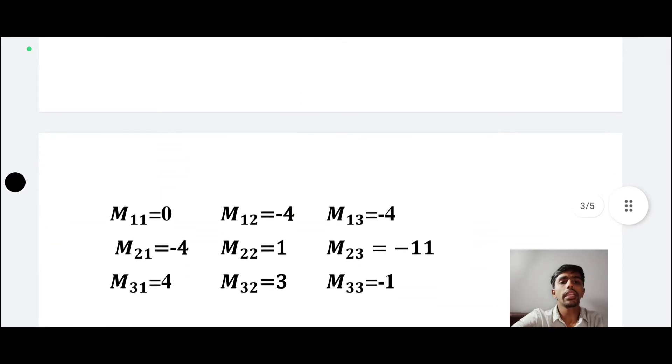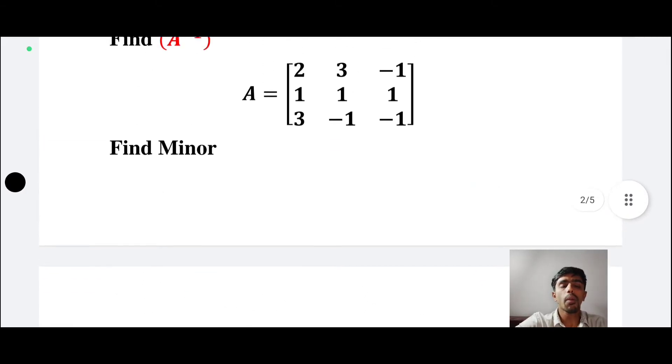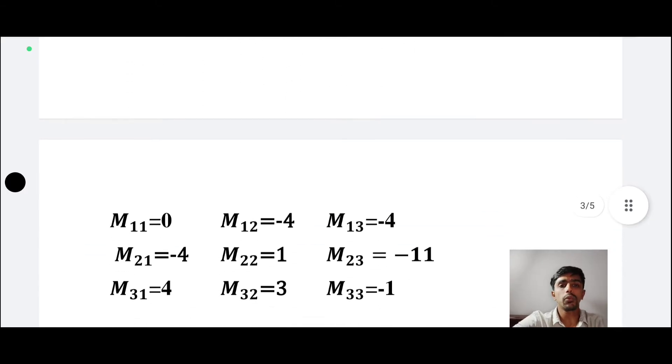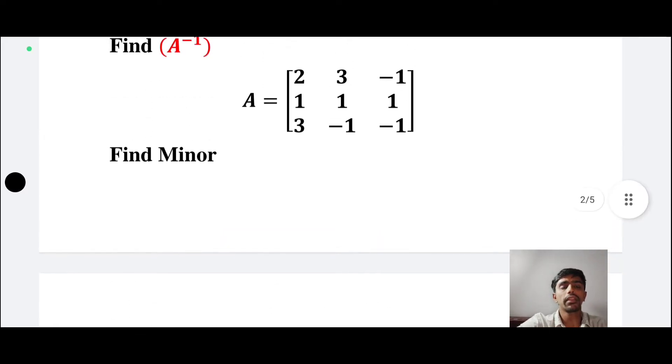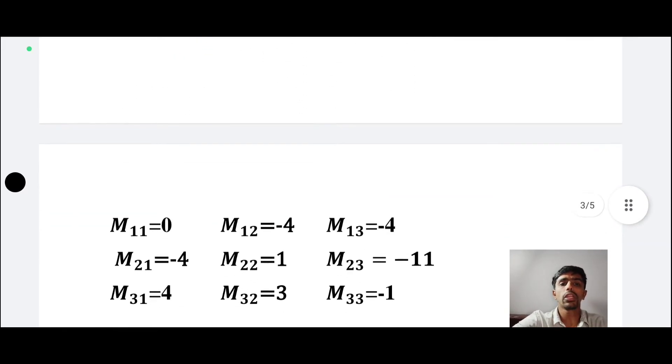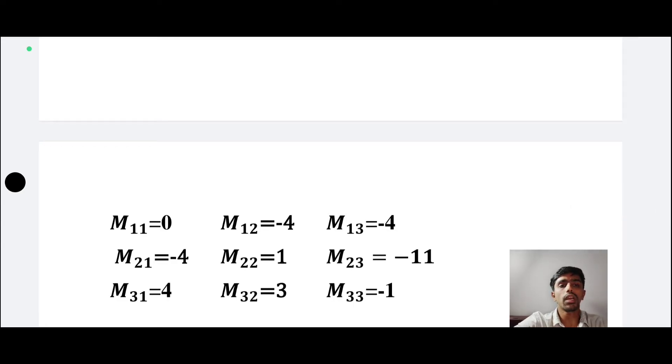So this is the matrix A. If we tell this matrix A, we will tell you the matrix A. For minor, m11, m12, m13, m21, m22, m23, m31, m32, m33. Now the value of M11 is 0, M12 is minus 4, M13 is minus 4, M21 is minus 4, M22 is 1, M23 is minus 11, M31 is 4, M32 is 3, and M33 is minus 1.